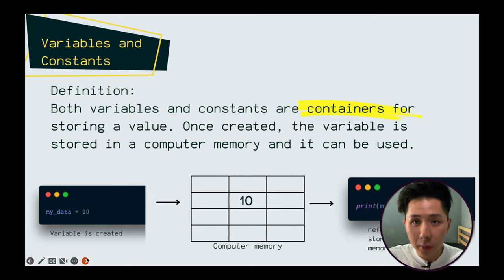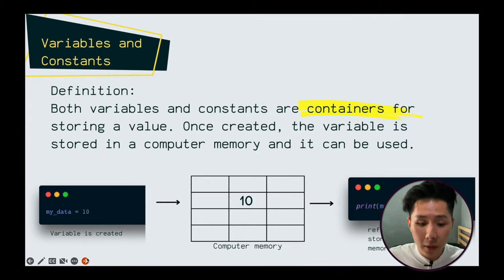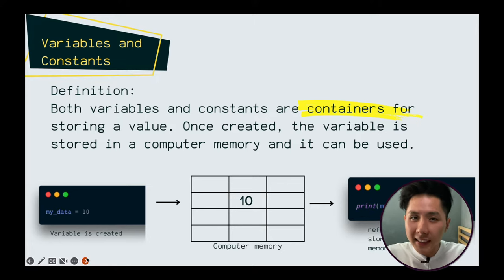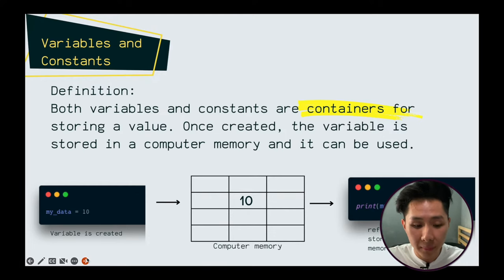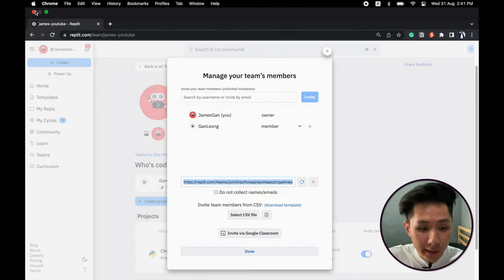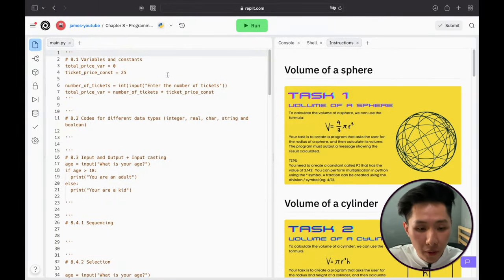Variables and constants are containers for storing values. Once created, the variable is stored in computer memory and can be used. Think of it as a box that stores a value, and you can take out the value whenever you want to. The way to create a variable in Python is very simple.